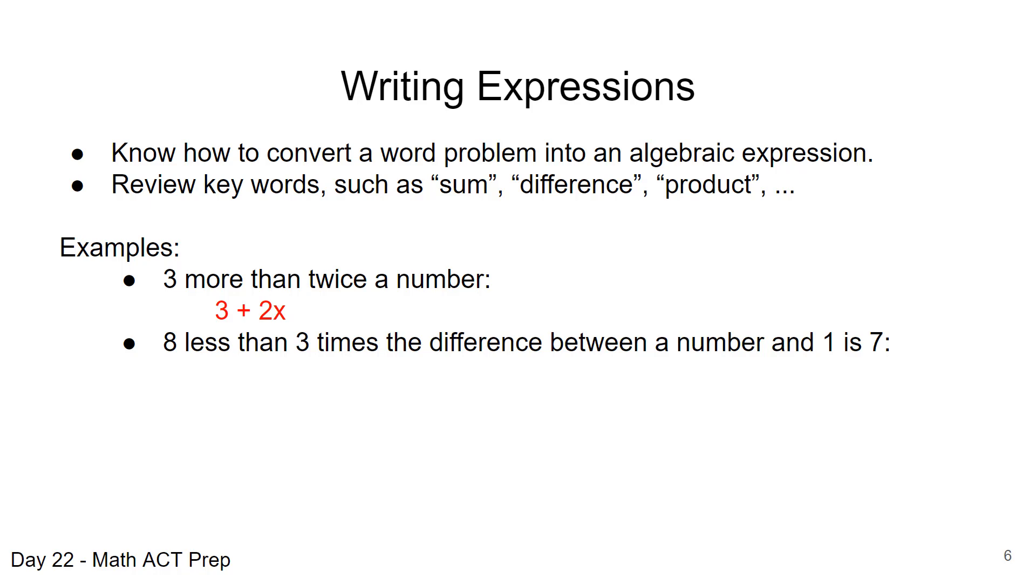So we're going to subtract a number. That is a variable. So we'll just use x. It really doesn't matter. But it will be dependent on what variable is used in the answer choices. So if we say our number is x, we would have x minus one. Three times that. And subtract eight from that. That is equal to seven. So that equates to three times x minus one. Three times the difference. Less eight, minus eight, is seven, equals seven. Practice using these kind of substitutions for values and in converting our words to expressions and equations.